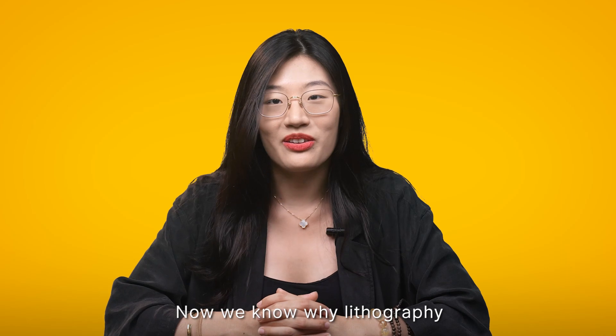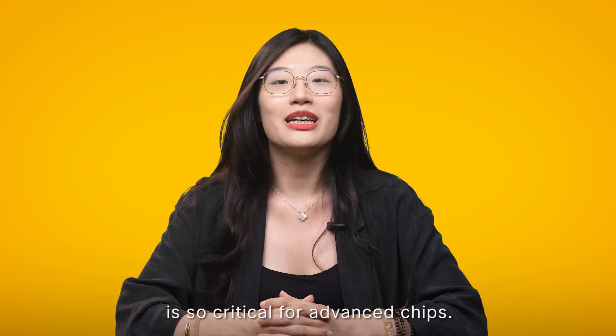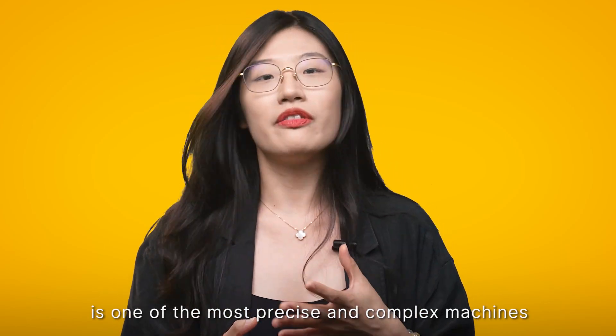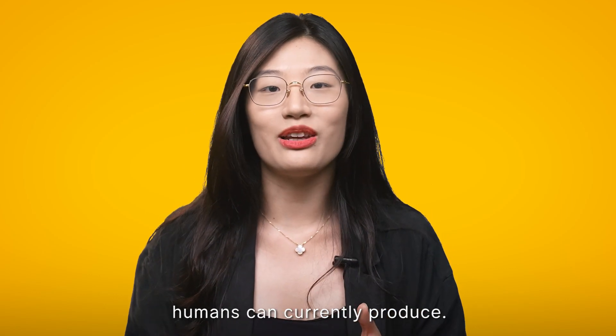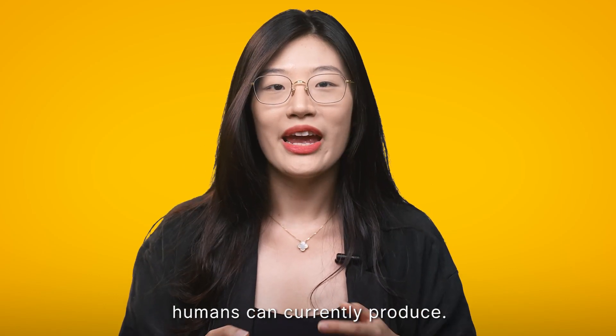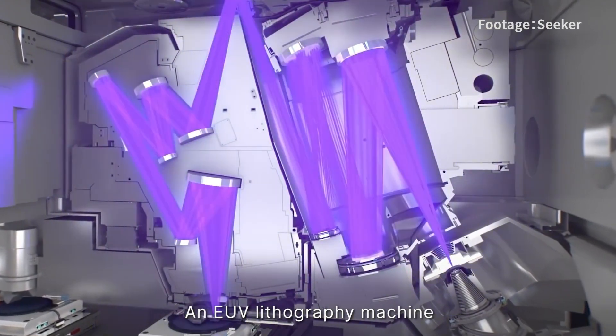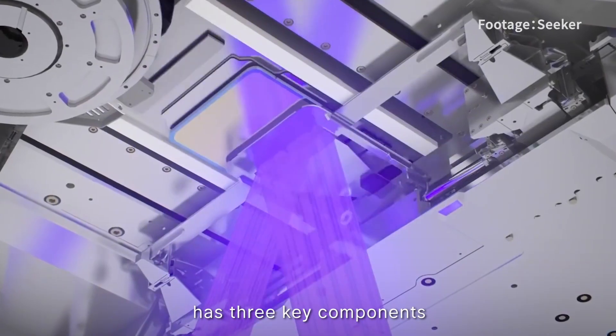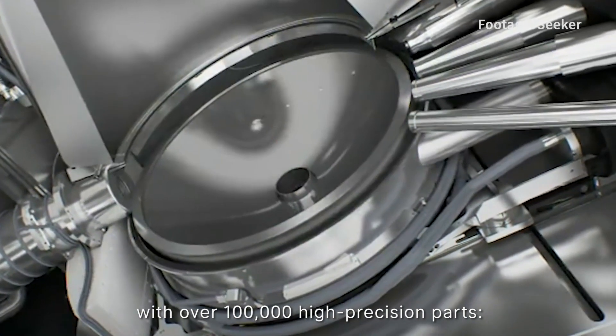Now we know why lithography is so critical for advanced chips. But a lithography machine itself is one of the most precise and complex machines humans can currently produce. An EUV lithography machine has three key components with over 100,000 high precision parts.